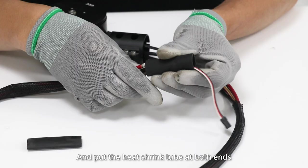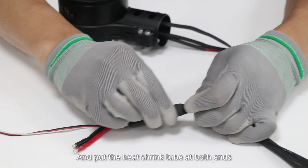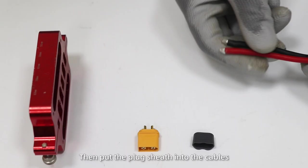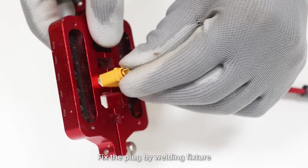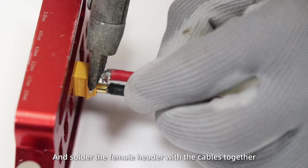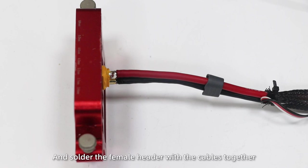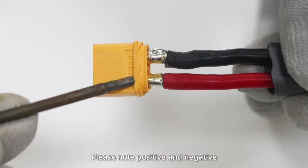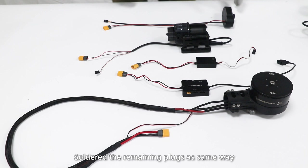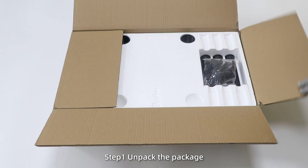First, put the motor cables into the plastic pipe and fix it with heat shrink tubes at both ends using a heat gun. Then put the plug sheath into the cables, fix the plug by welding fixture, and solder the female header with the cables together. Please note positive and negative. Solder the remaining parts in the same way.